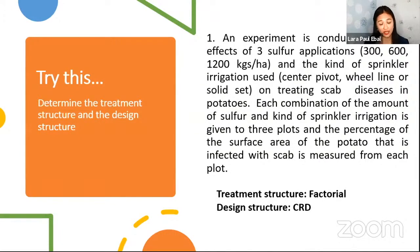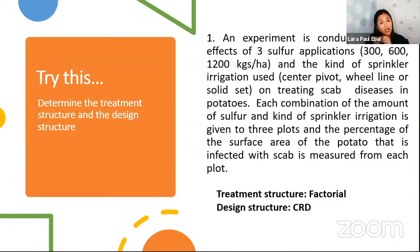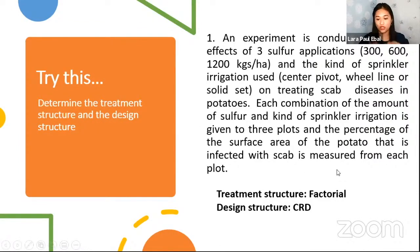In another version of the potato example, we are not only concerned with sulfur application, but also a second factor: sprinkler irrigation use — which can be center pivot, wheel line, or solid set. With these two factors combined, the treatment structure becomes factorial. However, the design structure is still CRD, since the different combinations of factors are randomly assigned to different plots.